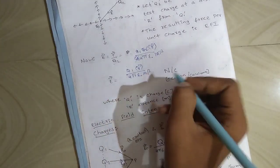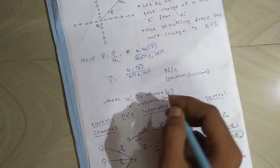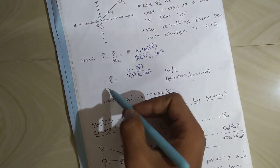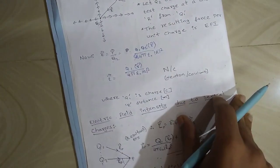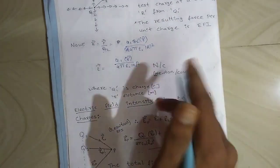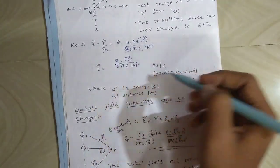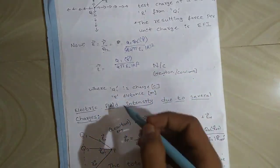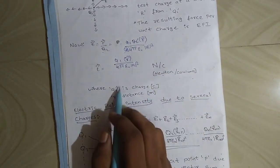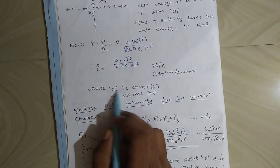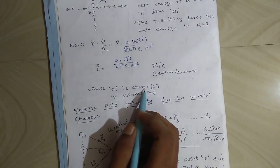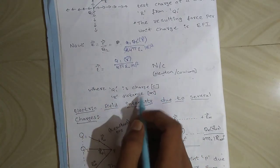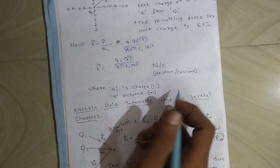So this is the formula to find EFI. The unit is Newton per Coulomb. Here q1 is the charge, measured in Coulombs, and r is the distance, measured in meters.